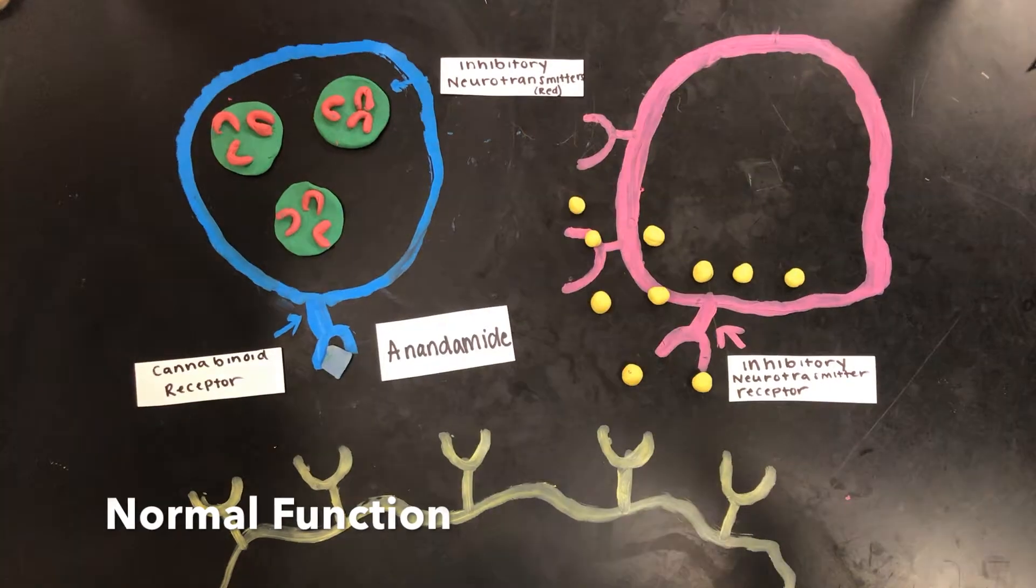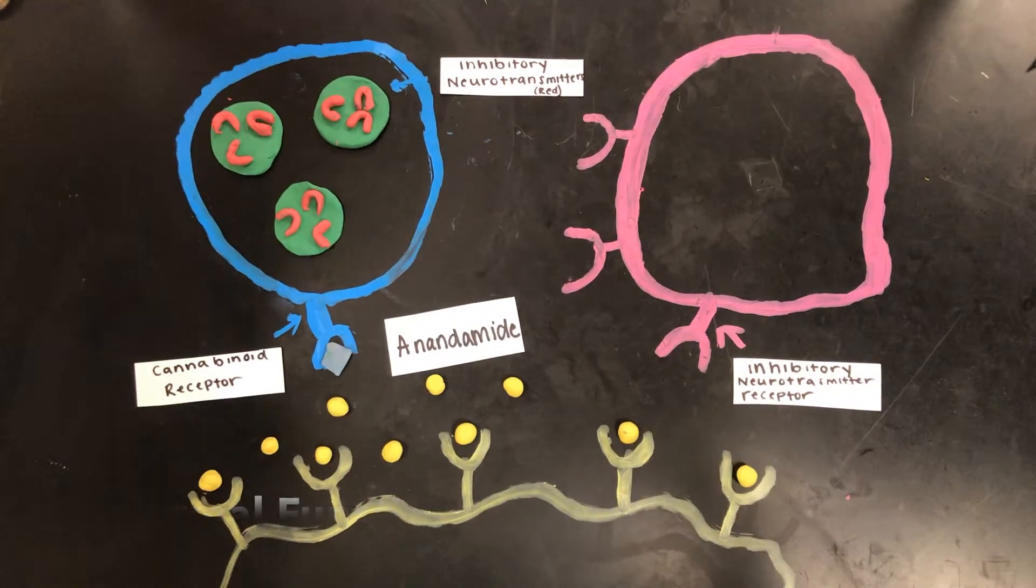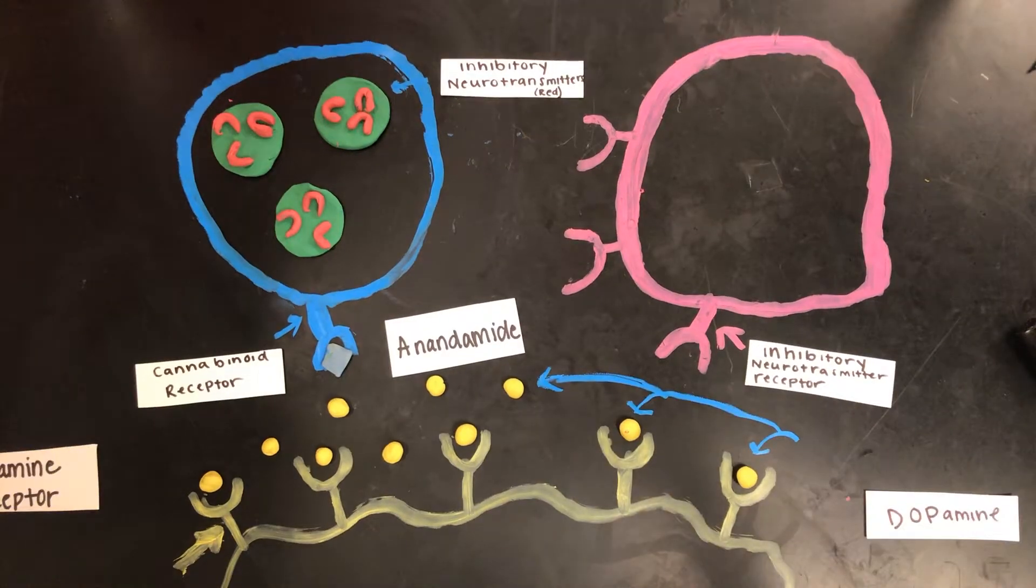When the body needs dopamine, anandamide binds to the cannabinoid receptor and prevents the release of inhibitory neurotransmitters, allowing the dopamine to be released.